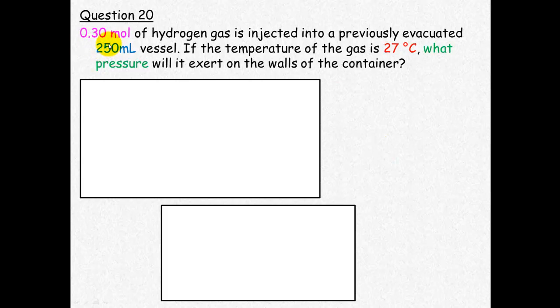Start by writing down the information you know. Number of moles is 0.30, volume is 250 milliliters, and temperature is 27 degrees Celsius.